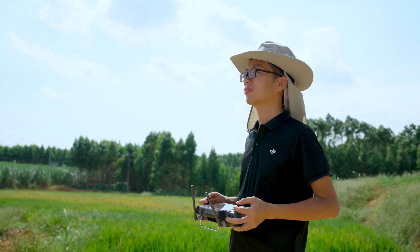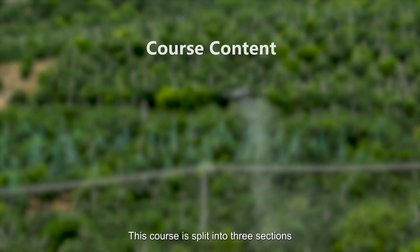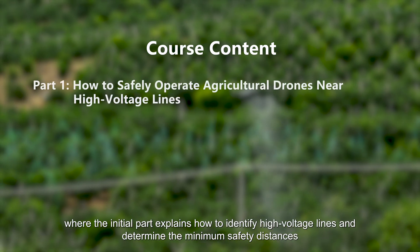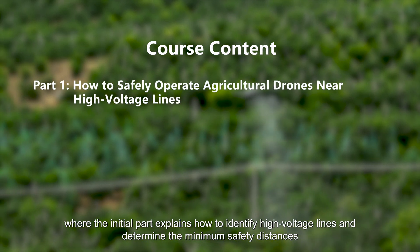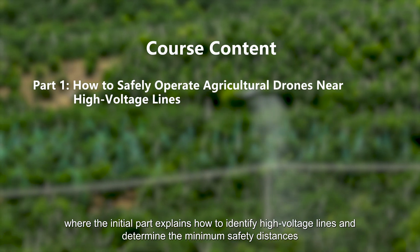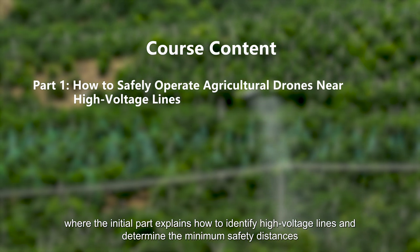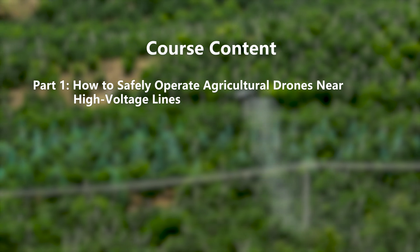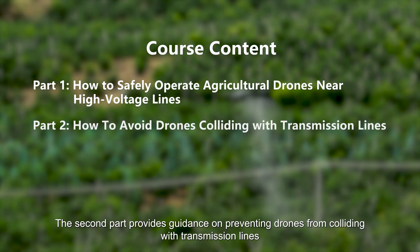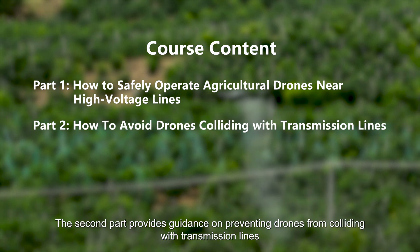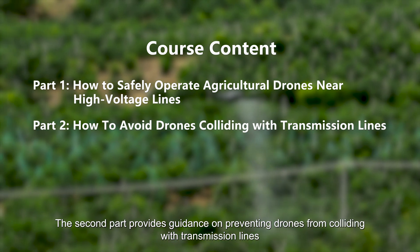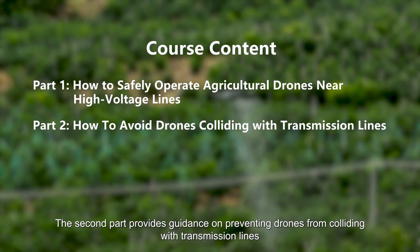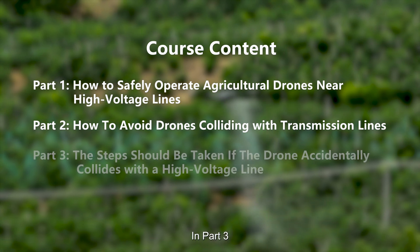This course is split into three sections. The initial part explains how to identify high voltage lines and determine the minimum safety distances. The second part provides guidance on preventing drones from colliding with transmission lines.